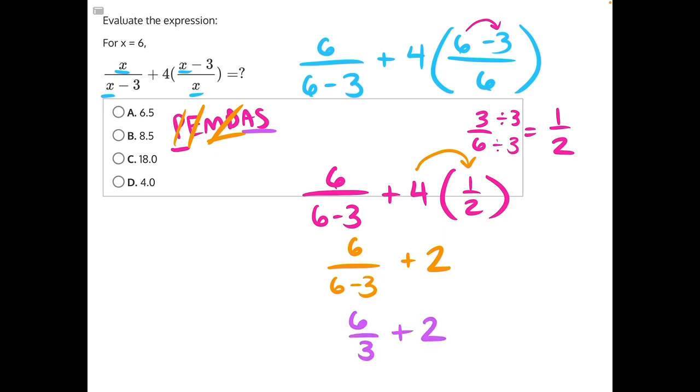And now we can go back and do one more step of division. 6 divided by 3, or 6 over 3, would give us 2. Plus 2 will give us 4. Making answer choice D our correct answer. We'll see you later.